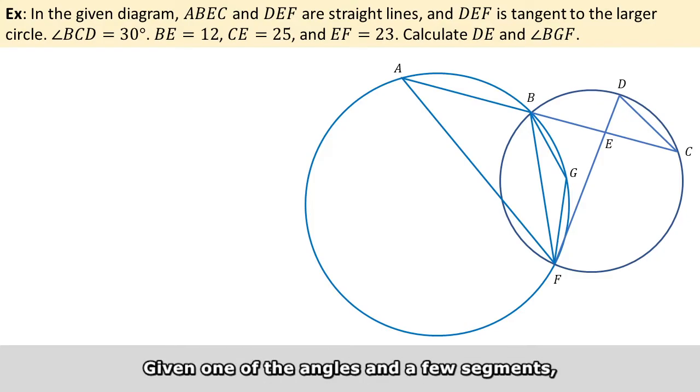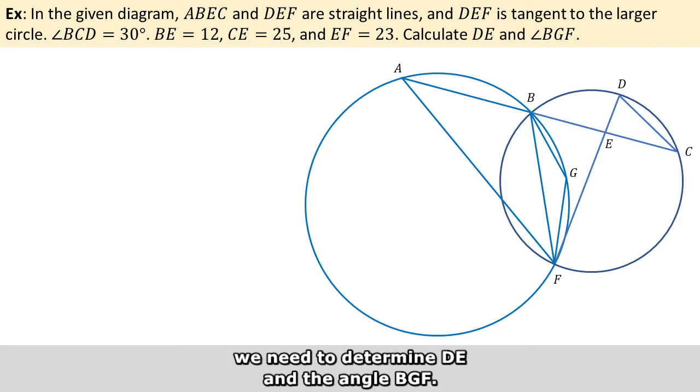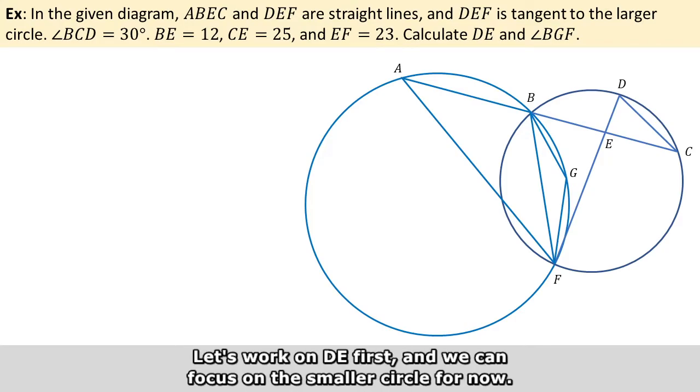Given one of the angles and a few segments, we need to determine DE and the angle BGF. Let's work on DE first, and we can focus on the smaller circle for now.